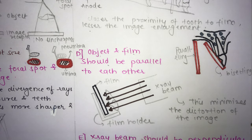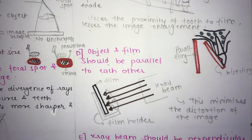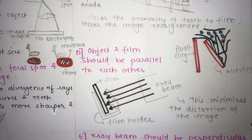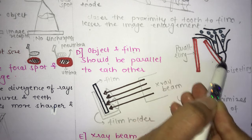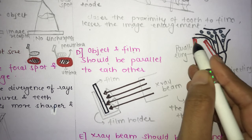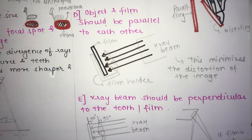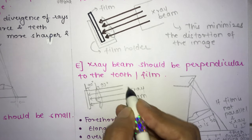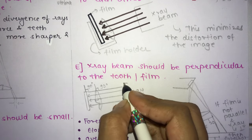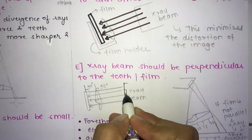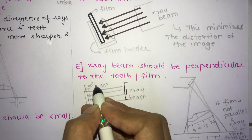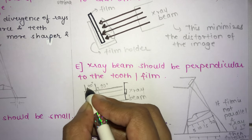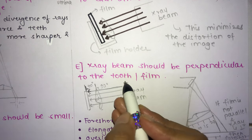Placing the film parallel to the object minimizes image distortion. These are the two techniques used — the bisecting angle technique and the paralleling technique. The fifth principle is that the x-ray beam should be perpendicular to both the tooth and the film. The x-ray beam, when generated, should be perpendicular to the long axis of the tooth and to the film, which also helps prevent image size distortion.